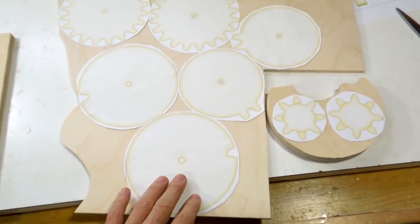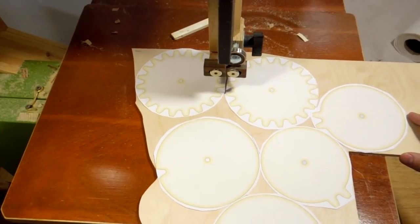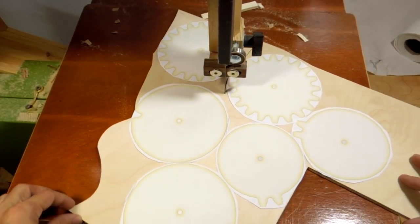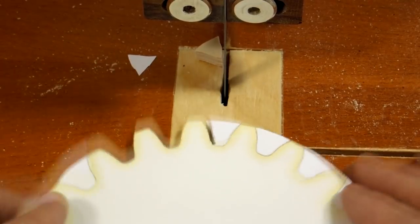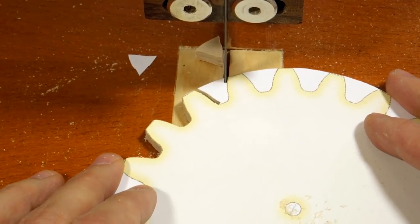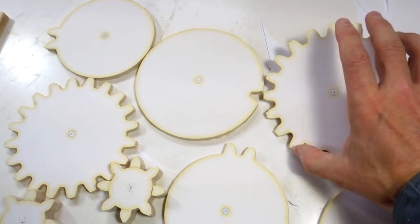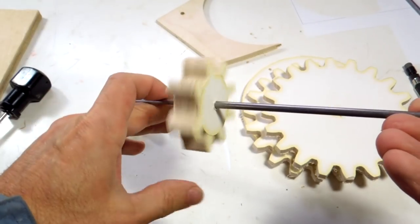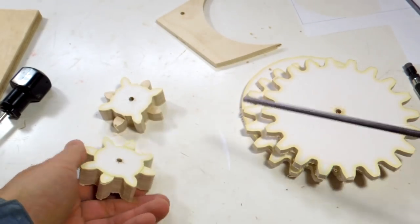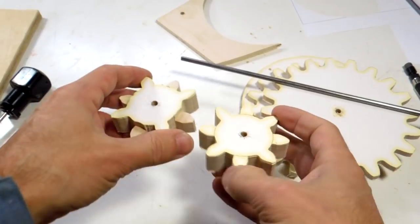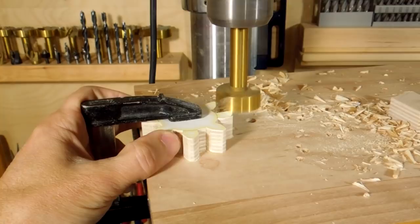I cut out my templates and arranged them as tightly as I could on odd shaped scraps. After 40 minutes on the bandsaw I got all my gear shapes cut out. I drilled these gears out so that they just barely slide freely on the shaft and spin freely. Next I need to cut away every other tooth to a certain depth. I'm gonna do that on the drill press.